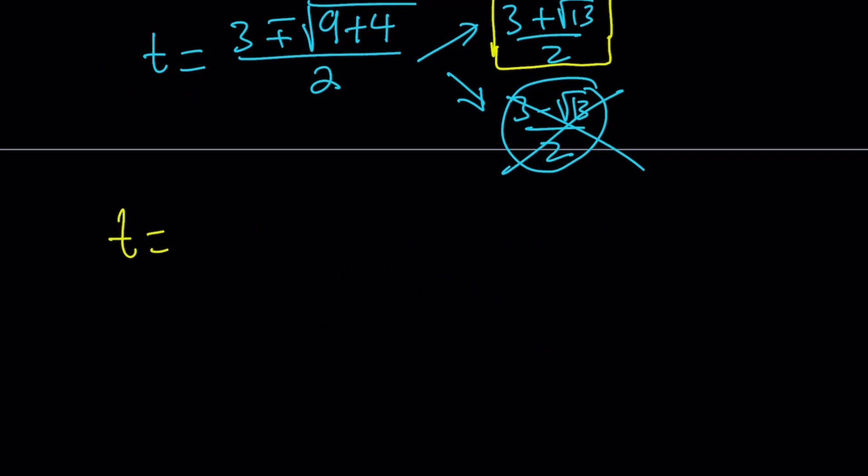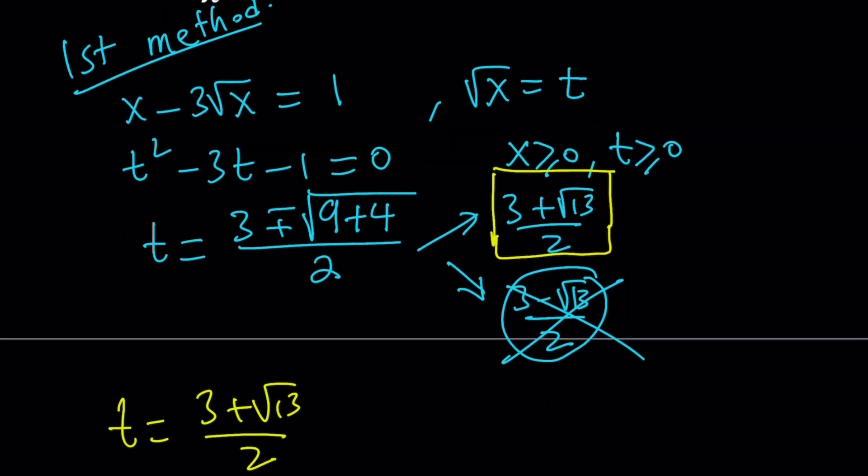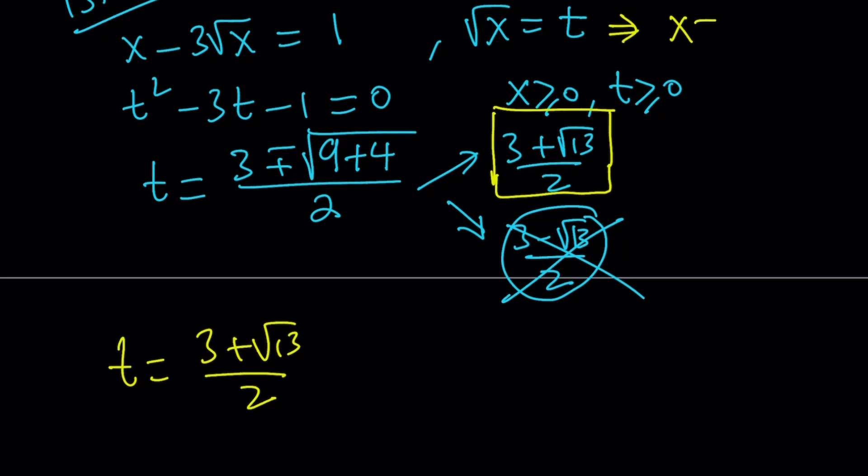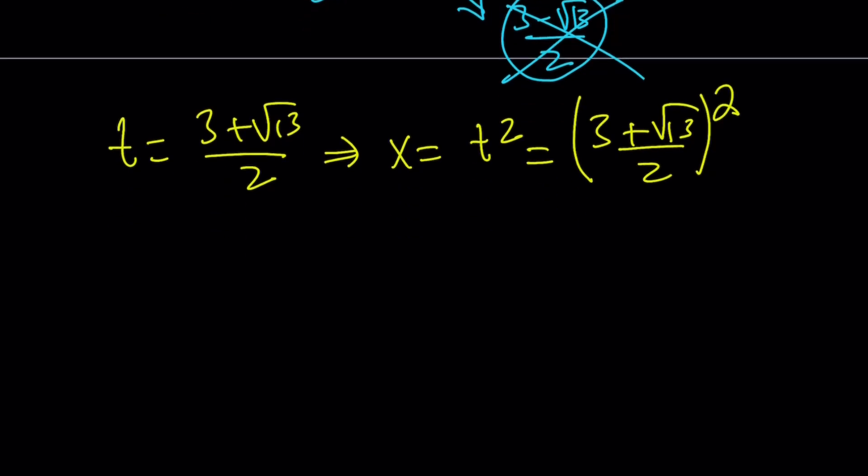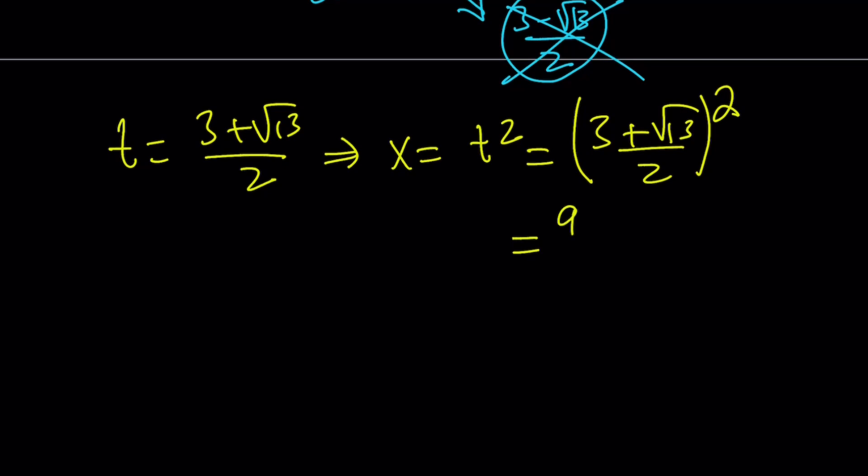Since we have the t value, t equals 3 plus root 13 over 2, and remember, x and t are related. We said that square root of x equals t. If x and t are both positive, then we can safely say that x equals t squared. Since we're looking for x, let's go ahead and square this. 3 plus root 13 over 2, I'm going to square that. I'll just square the numerator. 9 plus 6 root 13 over 4. And now this can be written as 22 plus 6 root 13 over 4. But I can divide everything by 2 and write this as 11 plus 3 root 13 over 2. So that's going to be my x value.